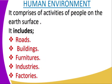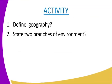The second branch is the human environment. The human environment comprises all activities of people on the earth's surface — all those things that have been created by human beings. This includes rooms, buildings, furniture, industries, and factories. All of these are part of the human environment.